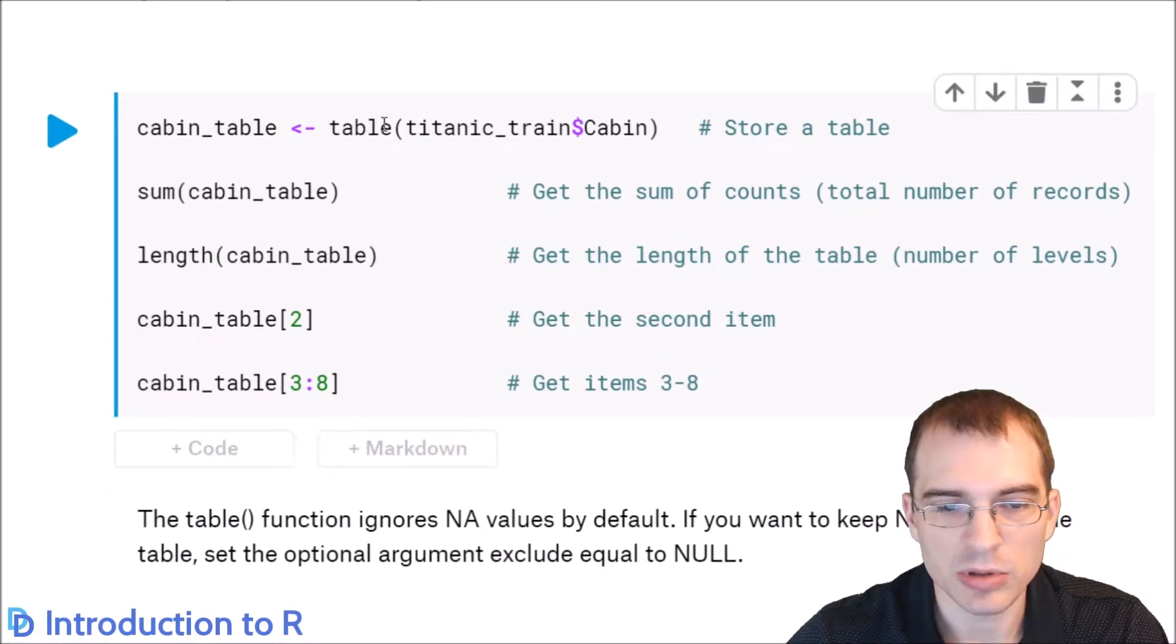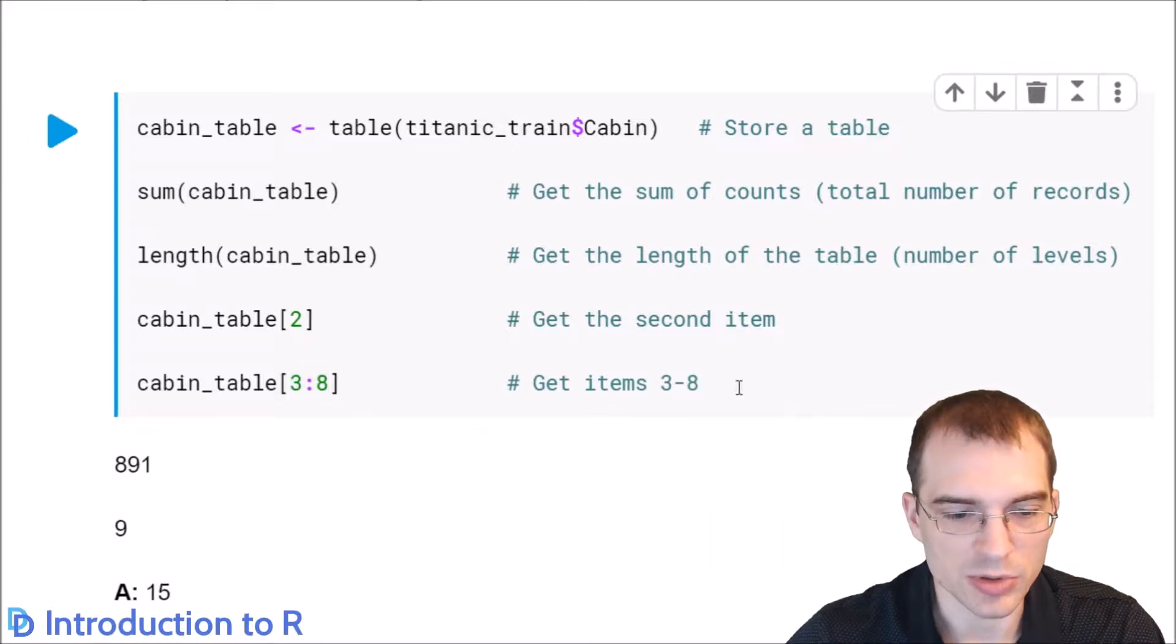For instance, we can make a table of cabin, as we're doing here, and we can do things like sum. So if we take the sum, that will just give us the total of all the counts. And we can take the length to see the number of levels in the table. Or we could see what the second item is by indexing into it with two. Or we could see items three through eight by using this index construction we've learned before. Let's run those and see what the results are.